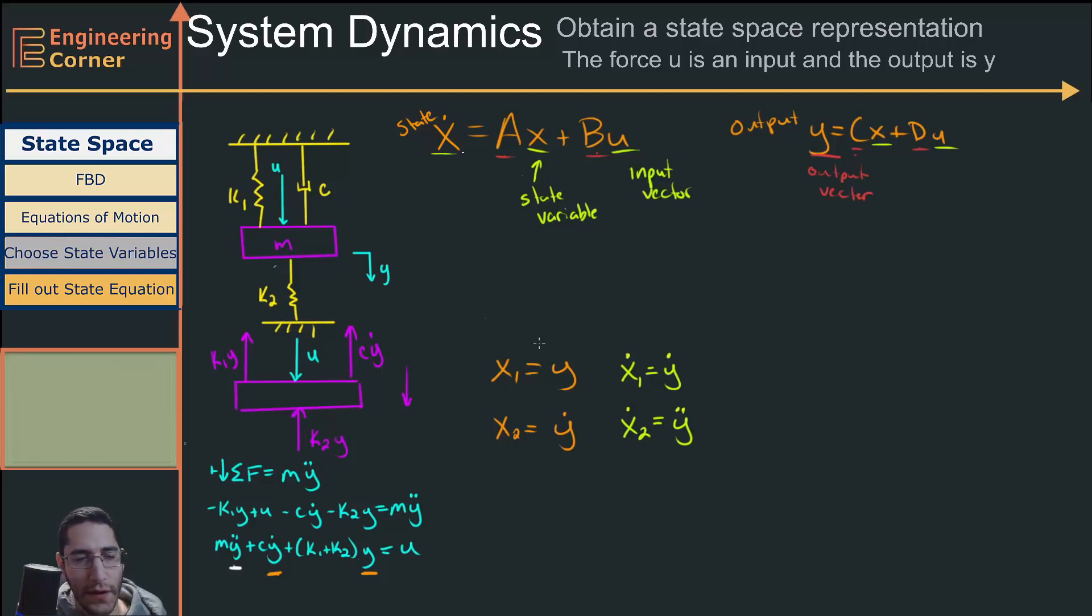Now the last thing I want to point out is these two equations right here. We have x1 dot equals y dot, and x2 equals y dot. So what we get right here is one of our state equations, which is x1 dot equals x2. Why is this important? Well, when we go back to these, these are all vectors over here.